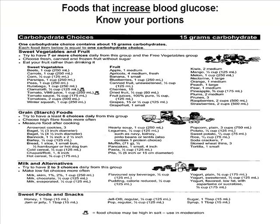Milk and alternatives are approximately all equal to one carbohydrate choice, which is 15 grams of carbohydrates. Similarly, one tablespoon of jam, jelly, or honey is the same as one slice of bread — equal to one carbohydrate choice. Use this handout as a guide when you're wondering how much carbohydrate a food contains.